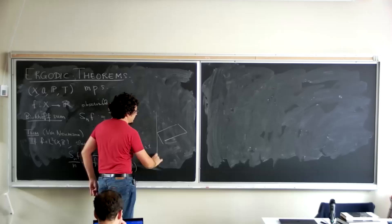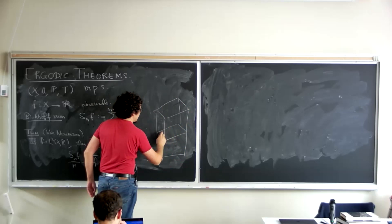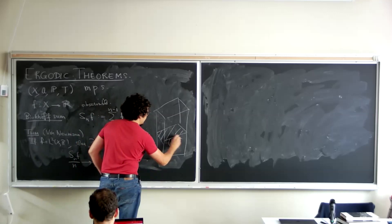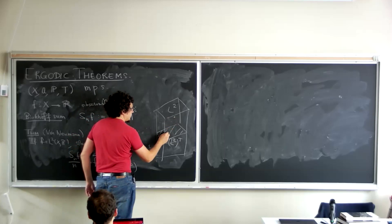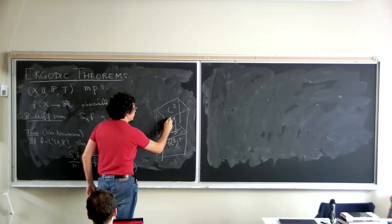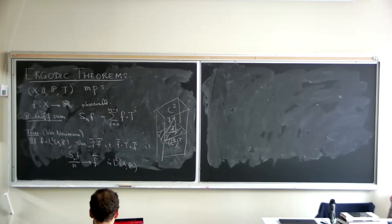This has a nice interpretation in terms of projection in the Hilbert space L2(X, P). The space of invariant functions is a subspace. The flavor is that you take a vector in the space and project it down — this is F, and this is F-bar — so you have this geometric interpretation.